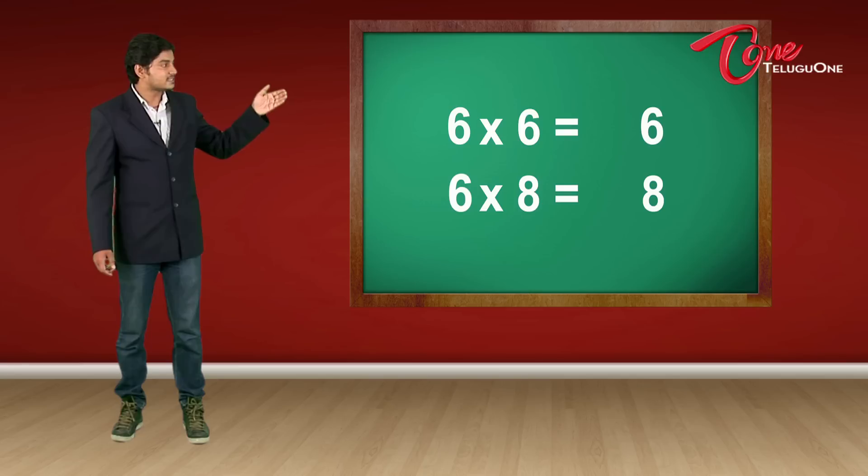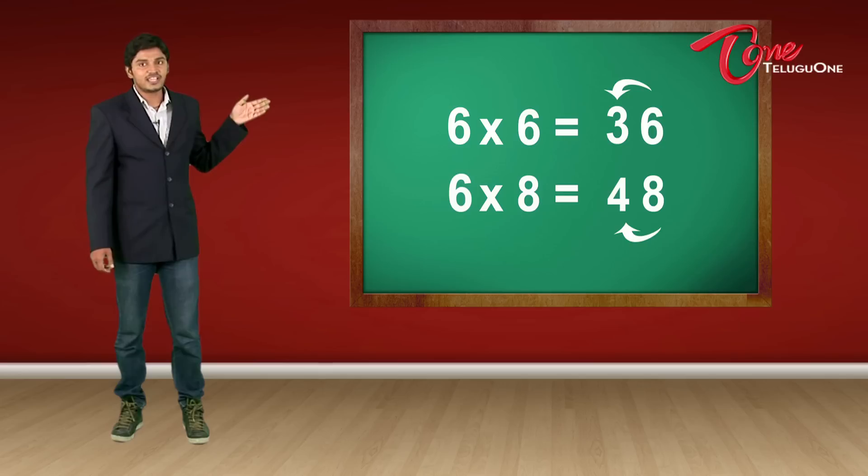Now, half of 6 is 3. Write just before 3. Write just before 6 and it is 36. And for my 6 times 8, I have to write just 4 before my 8 and it is 48. So, now we have seen that 6 times 6 and 6 times 8 will do entire 6 table.